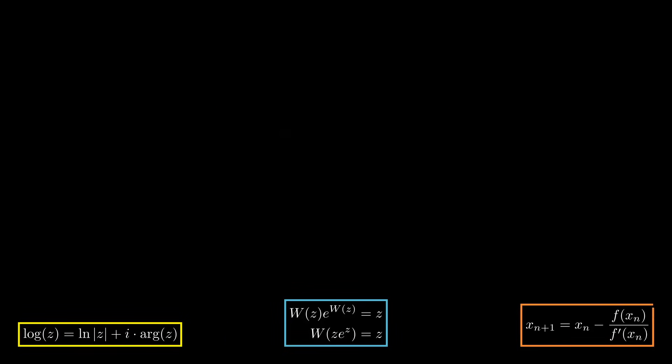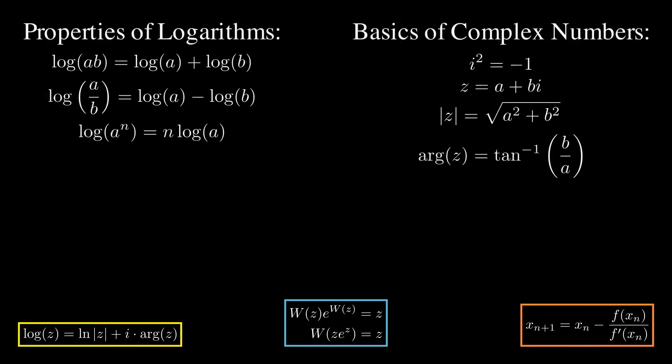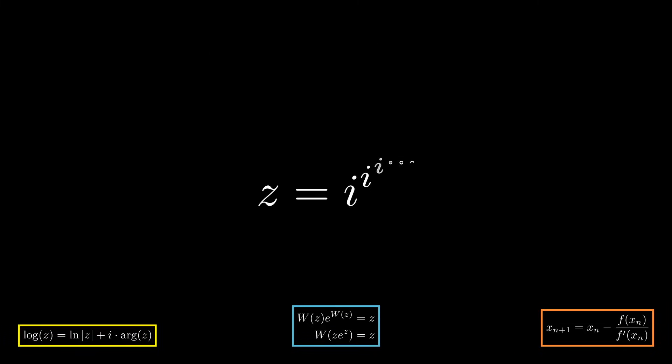Now we're also going in with the basics of properties of logarithms and how complex numbers work. Let's call our problem z. Our job is to find z and we can do that using an old trick with these power towers by rewriting the entire exponent as z.